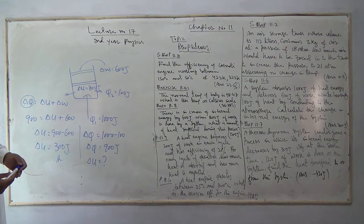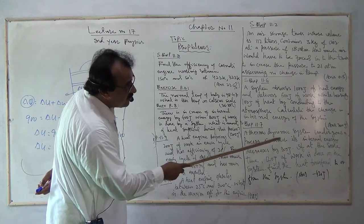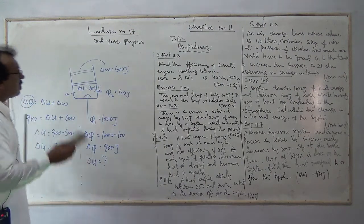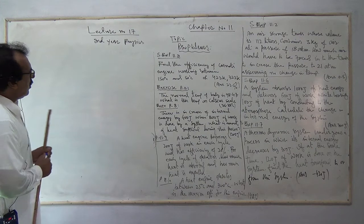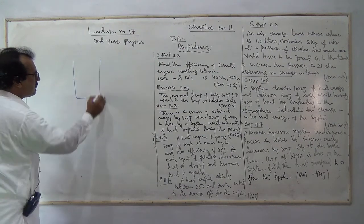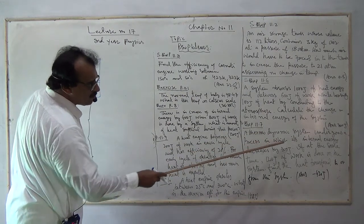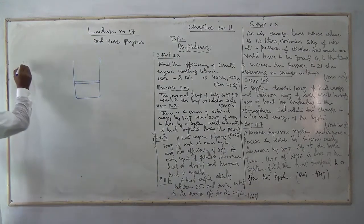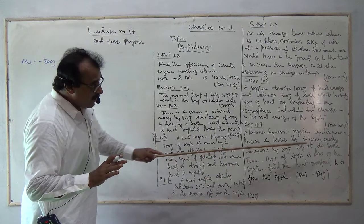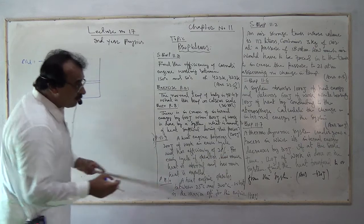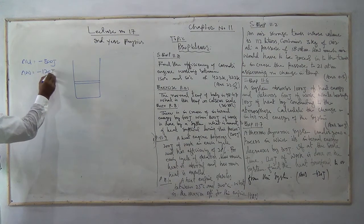Problem number 3: A thermodynamic system undergoes a process in which its internal energy decreases by a certain amount — delta U is a negative value. At the same time, V joules of work is done on the system, so delta W is negative.